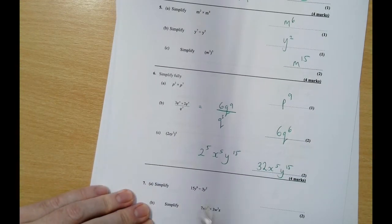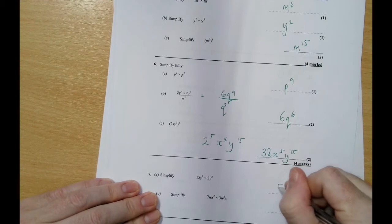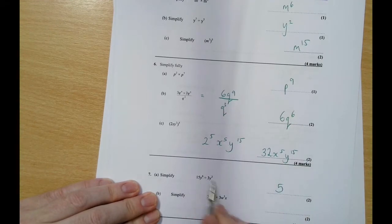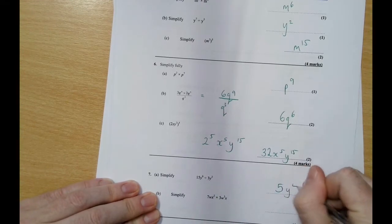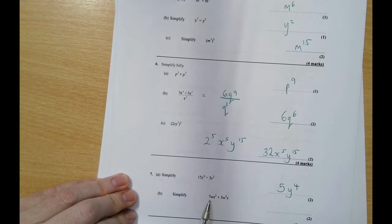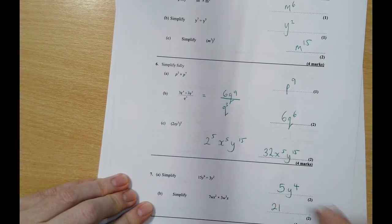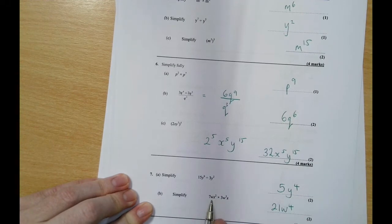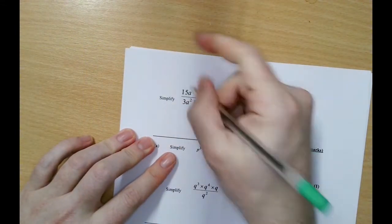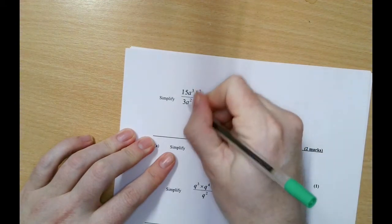This one here, numbers deal with numbers, 15 divided by 3 is 5, so that's gonna be 5. And then y6 divided by y squared is y4. Simplify this one, 7 times 3 is 21, w times w cubed would be w4, and then x squared times x would be x cubed.